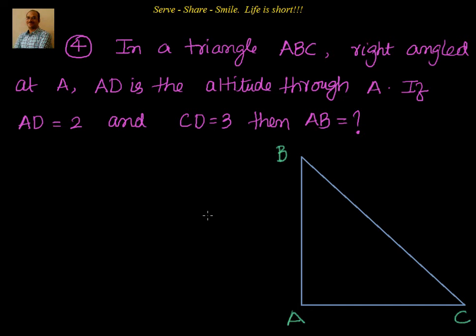We know that whenever we have a right-angled triangle and we draw an altitude from the vertex where we have a right angle, it's divided into two triangles which are similar to each other and also similar to triangle ABC.